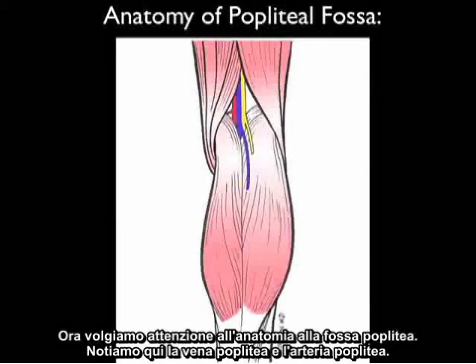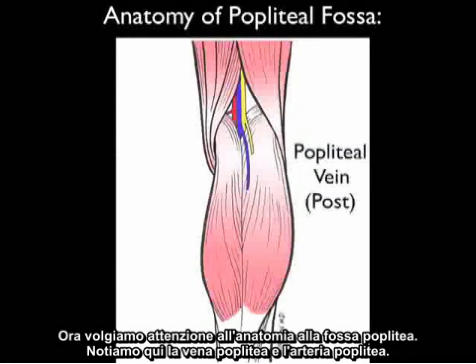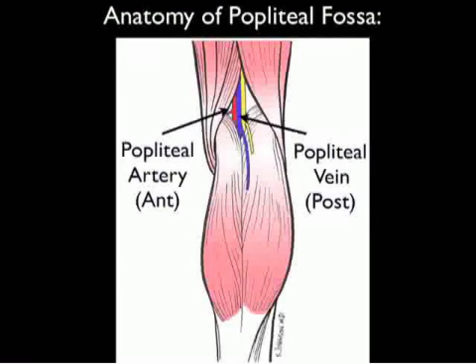Now let's turn our attention to the anatomy of the popliteal fossa. We note here the popliteal vein and the popliteal artery. Remember that the popliteal vein is going to be in an orientation located more posterior to the popliteal artery, which will be located more anterior.